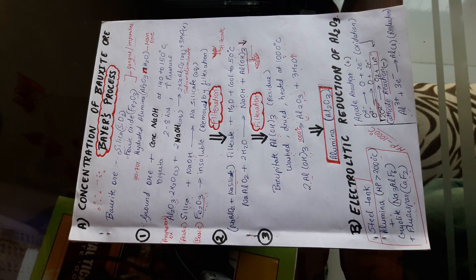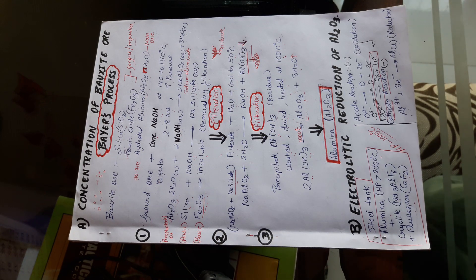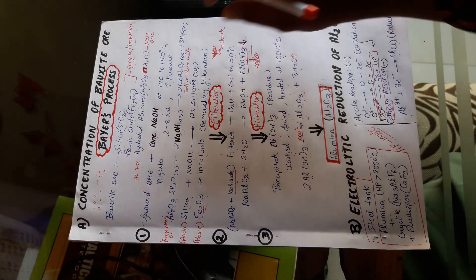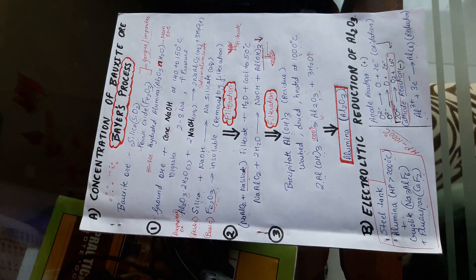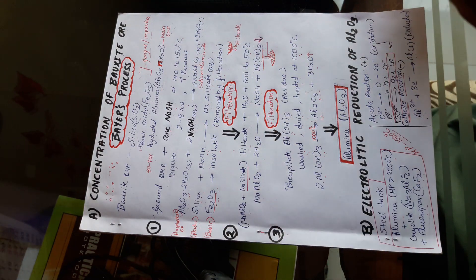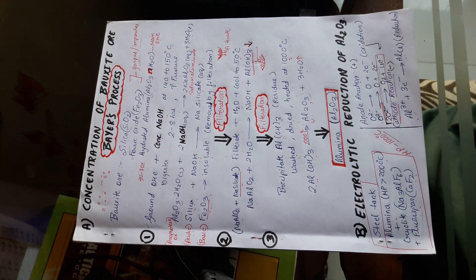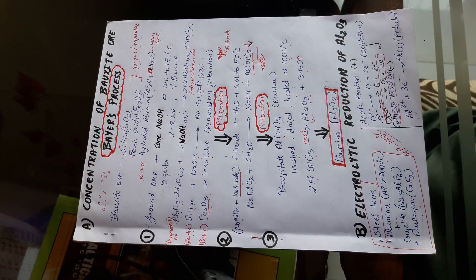Let us revise another topic, that is electrolytic reduction of alumina. We have studied about concentration of ore, that is bauxite ore, by Bayer's process and Hall's process. Once ore is concentrated, it has to be reduced.